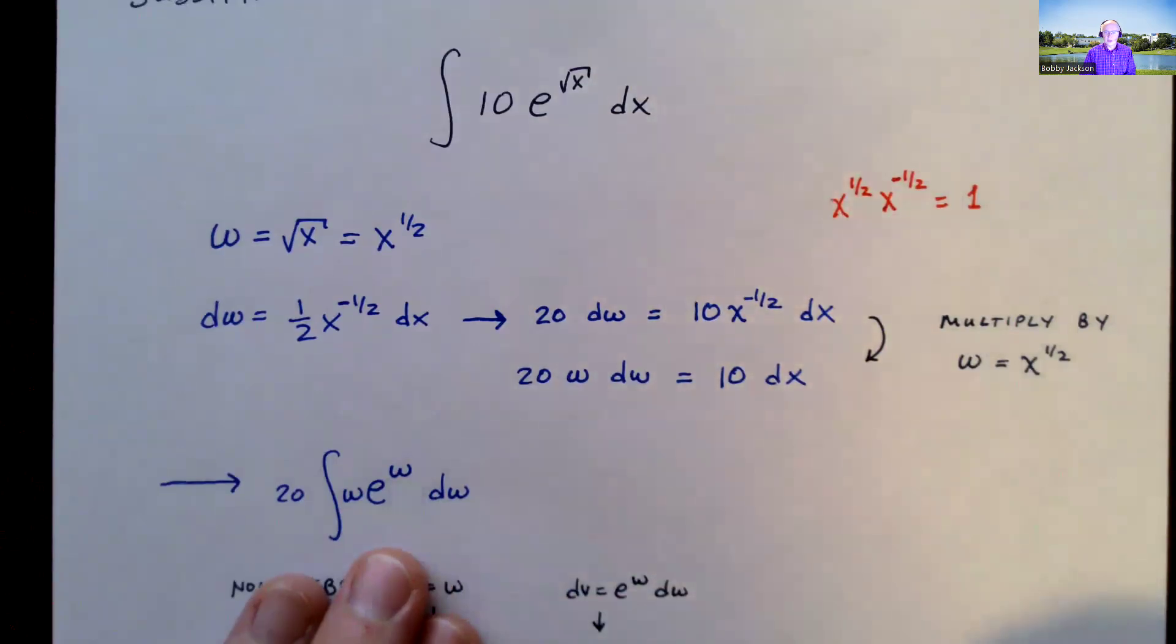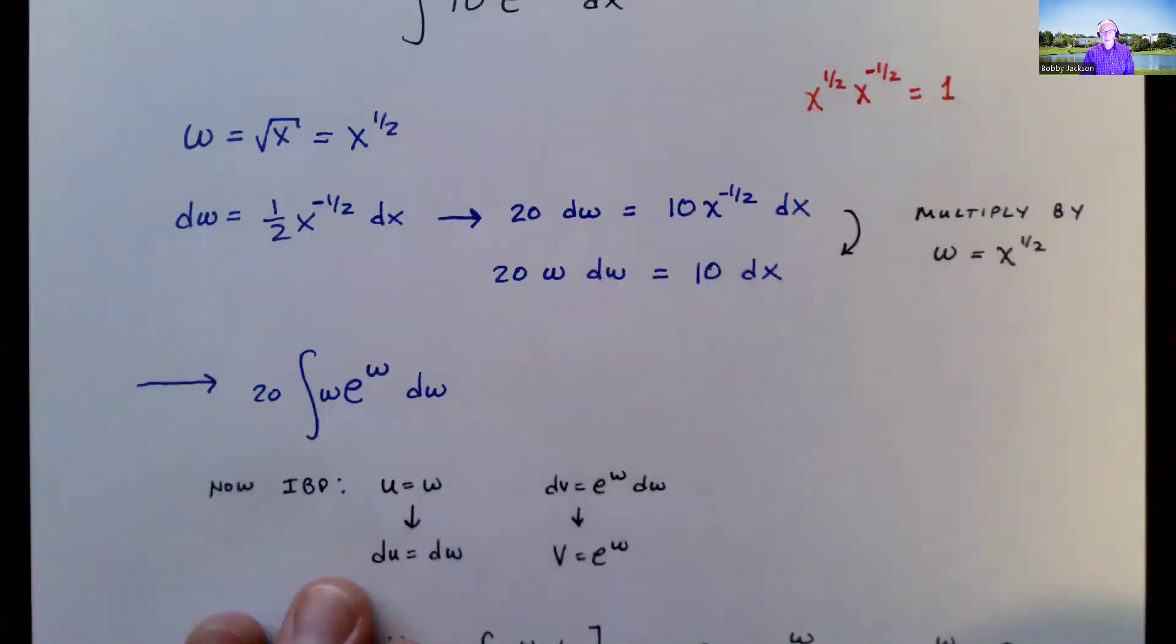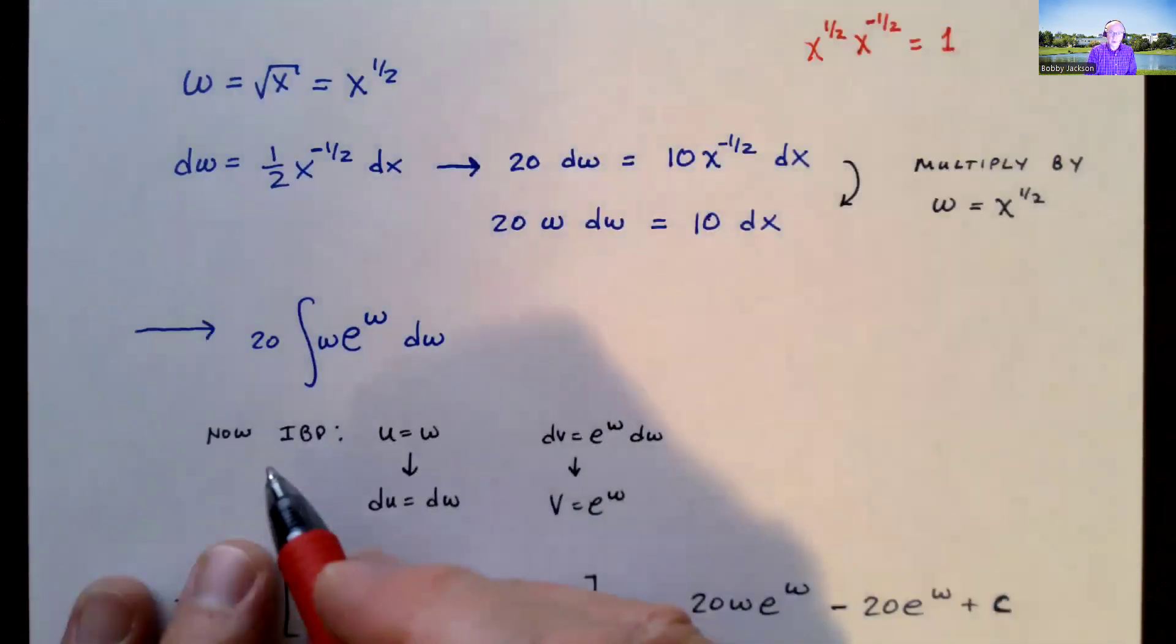But I do have times w. So now this is where I need to use a substitution. Sorry, integration by parts. Excuse me. Integration by parts. I've just used the substitution. So integration by parts.